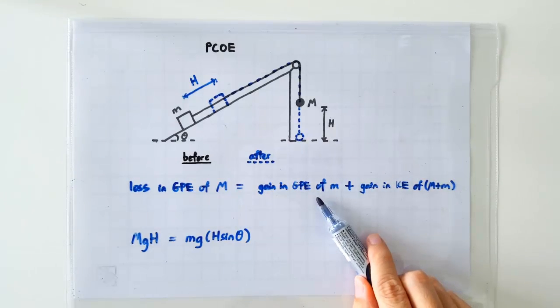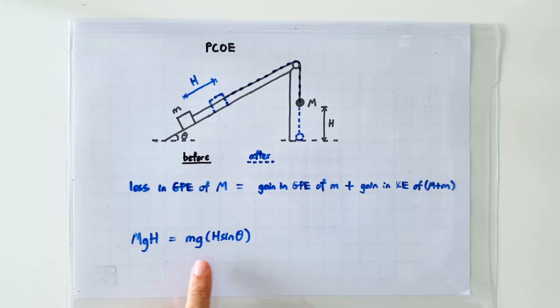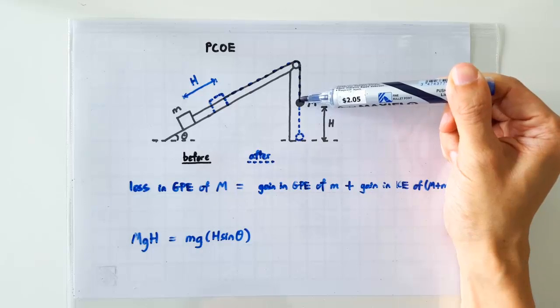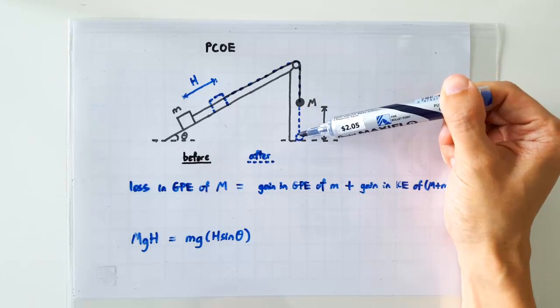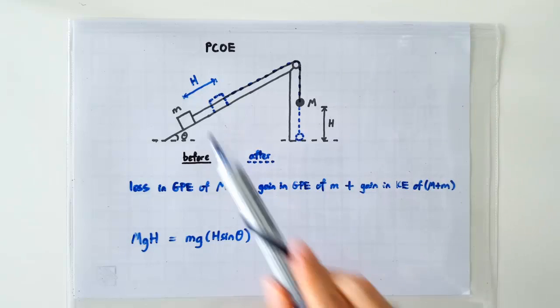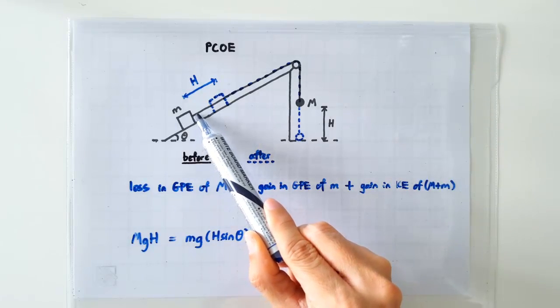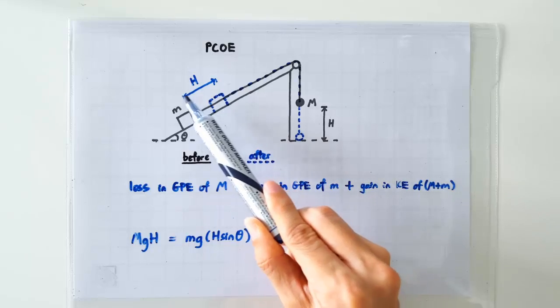The gain in GPE of the wooden block is MGH sine theta. This is because if this end of the string has gone down a distance of H, then this end of the string should also have gone up along the slope by a distance H.